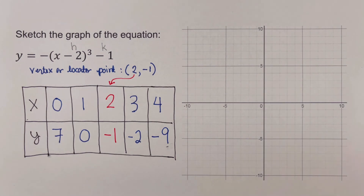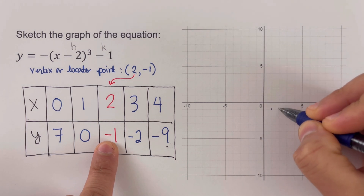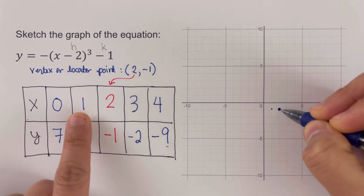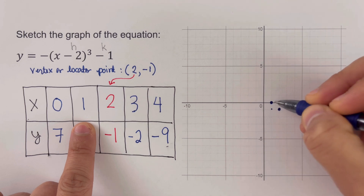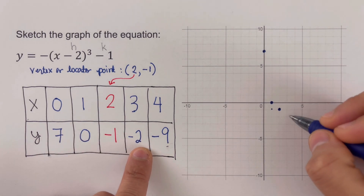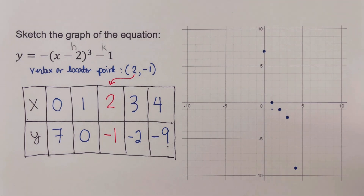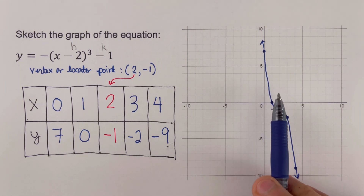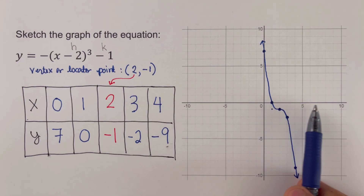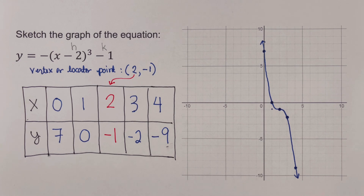The last step is to sketch the graph. The vertex sits at (2, −1). Then (1, 0) is nearby. The point (0, 7) goes all the way up. Then (3, −2) is down here, and (4, −9) is further down. We sketch the cubic graph through these points. Notice that the tails go toward negative infinity and positive infinity on the x-axis, and the graph goes all the way up and down. So both the domain and range are all real numbers.